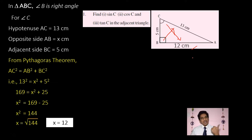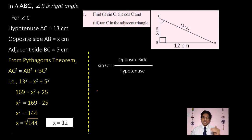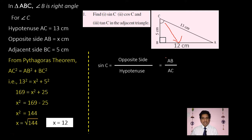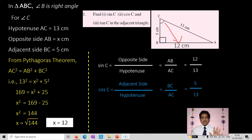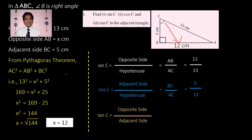Now with all three sides known — AB = 12, BC = 5, AC = 13 — we can write the trigonometric ratios for angle C. Sin C = opposite/hypotenuse = AB/AC = 12/13. Cos C = adjacent/hypotenuse = BC/AC = 5/13. Tan C = opposite/adjacent = AB/BC = 12/5.